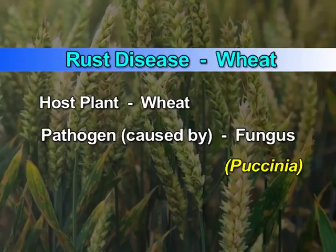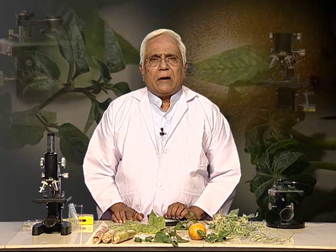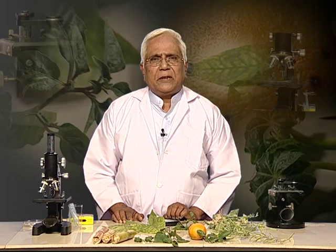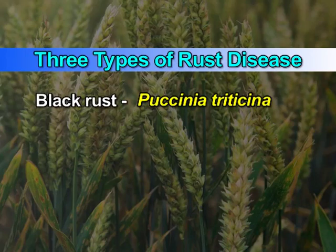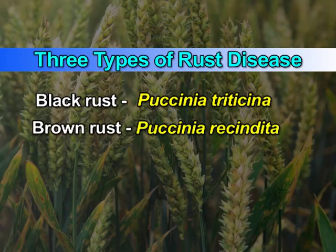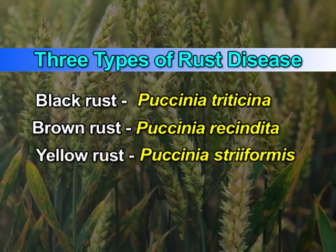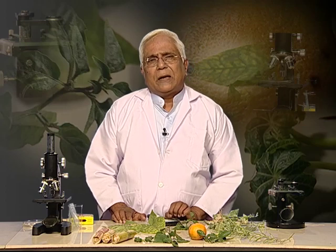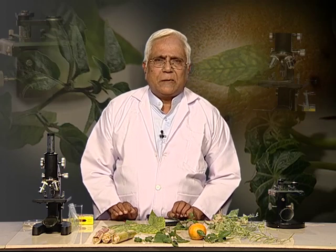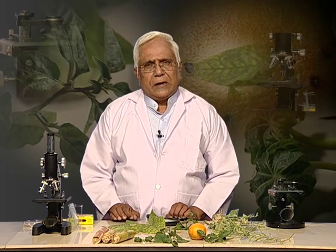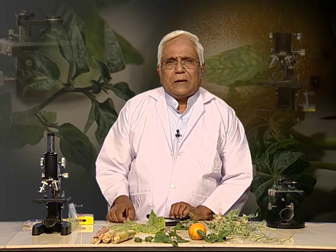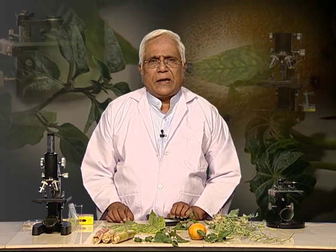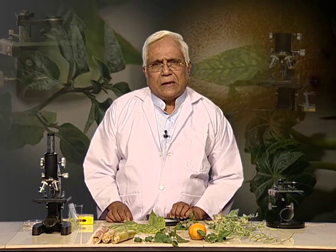The next disease is rust disease in wheat, again a fungal disease caused by Puccinia. There are three types: black rust caused by Puccinia triticina, brown rust caused by Puccinia recondita, and yellow rust caused by Puccinia striiformis. The leaf and stem are infected, decreasing photosynthesis and yield. Remedial measures are use of disease-resistant varieties and fungicides like Tridemorph.